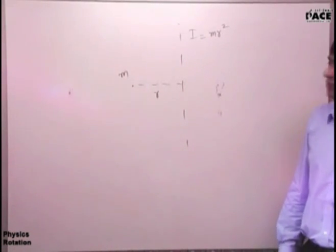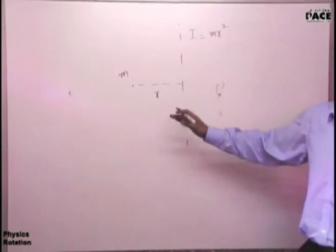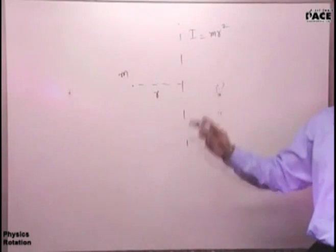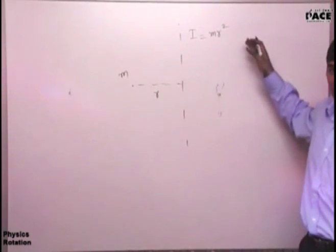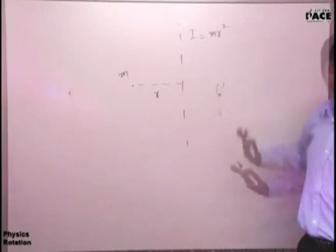Now tell me, if there are 4-5 point masses, one m1 at r1 distance, another m2 at r2 distance, and if you find all the moment of inertia, then what will happen? m1 r1 squared plus m2 r2 squared and so on, summation.